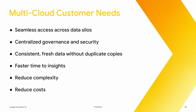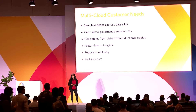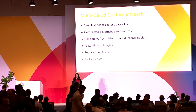Most customers who have data in multiple clouds want a single view — a single pane of glass — with centralized governance and centralized security, so they can access data securely and easily regardless of where it is. With multiple copies of data, there's duplication and inconsistency, so they want fresh, consistent data. With data across multiple clouds, there's a need to join datasets for faster time to insights, advanced analytics, and machine learning. Data split across multiple clouds also creates increased complexity, engineering overhead, and the cost of moving data with egress costs and duplication costs.